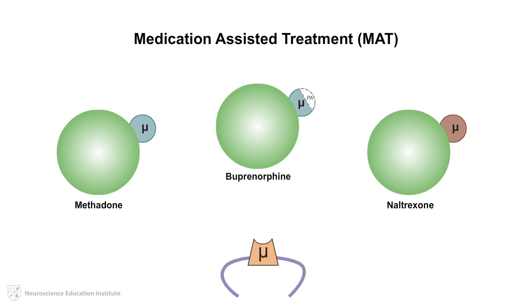In the following animation, we will review the mechanism of action of these three agents and discuss using these agents to achieve continued opioid abstinence. We will use heroin as an example of opioid use. However, the following applies to treatment of any opioid abuse, including prescription drugs such as oxycodone and hydrocodone.